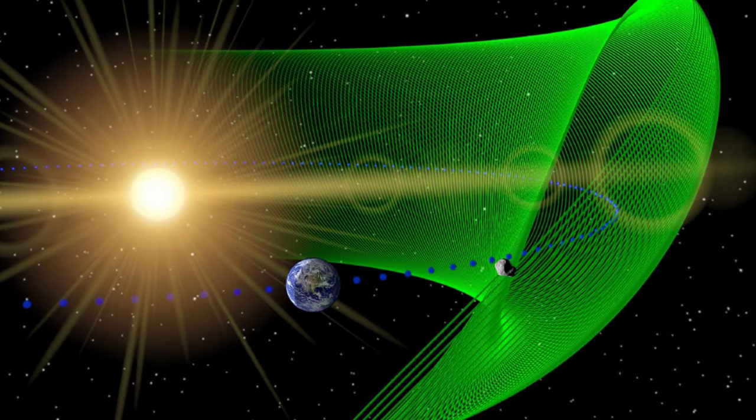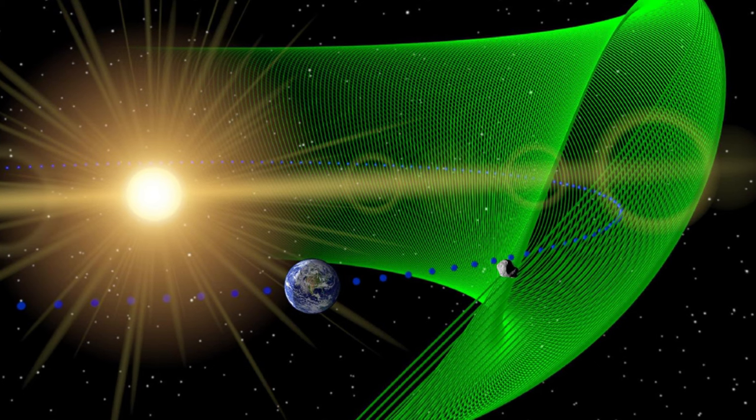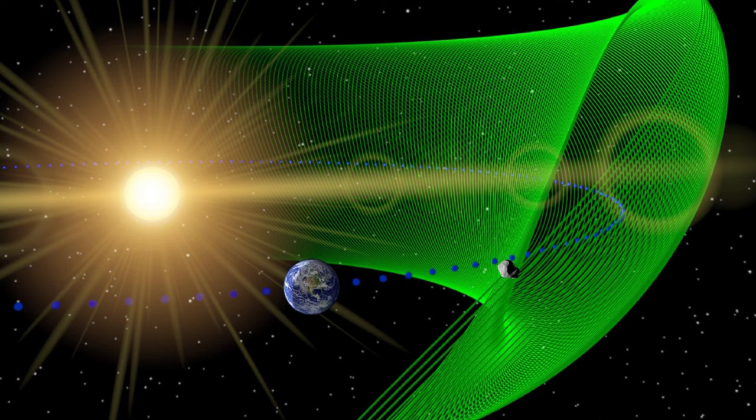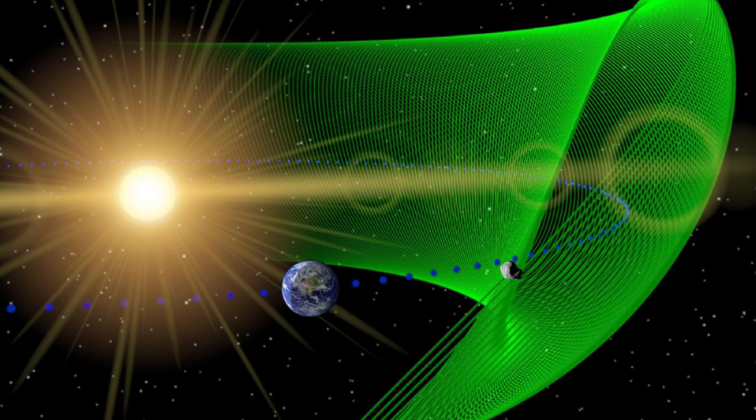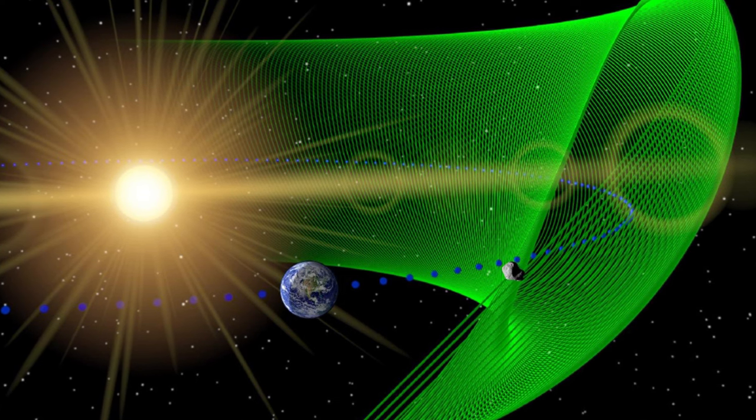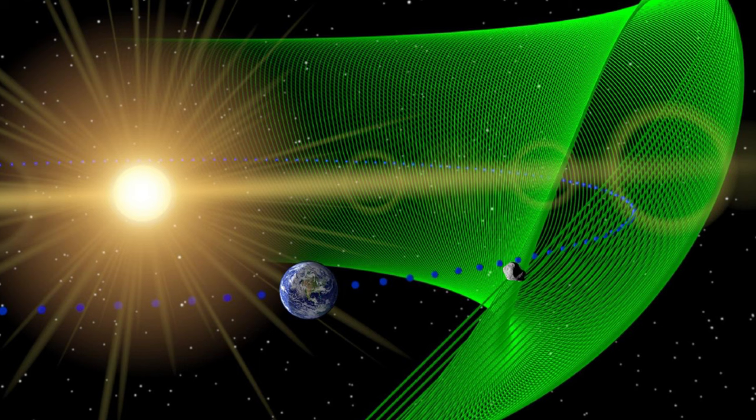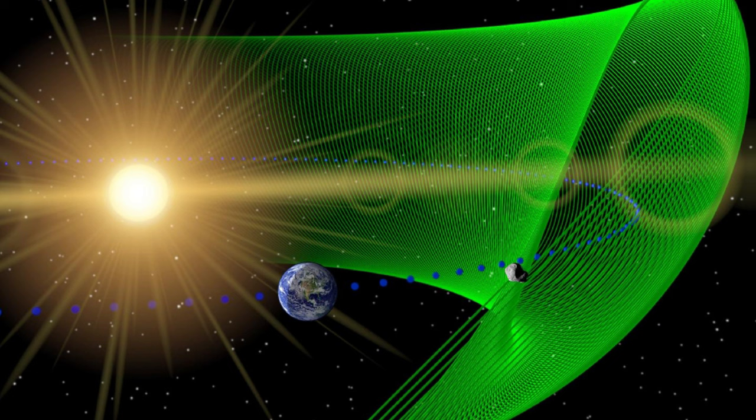Earth's other Trojan, named 2010 TK7, is a chunk of rock around 300 meters across, hanging about the Earth-leading L4 Lagrangian in an oscillating tadpole-shaped orbit known as Libration. It's not a permanent fixture though. Eventually, in around 15,000 years, gravitational interactions will kick it out of its current orbit.